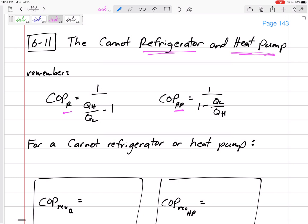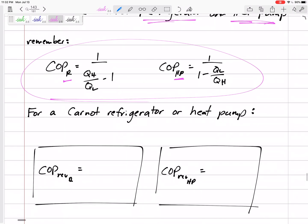So remember our coefficient of performance equations for refrigerators and heat pumps. These are for any refrigerator and any heat pump. But if we know it's a Carnot refrigerator or a Carnot heat engine, then we know that it's operating on all reversible processes, or it's going through these isothermal processes.